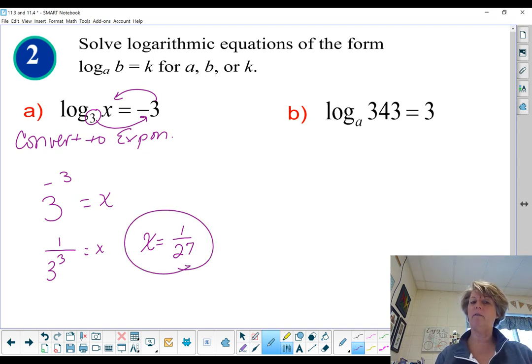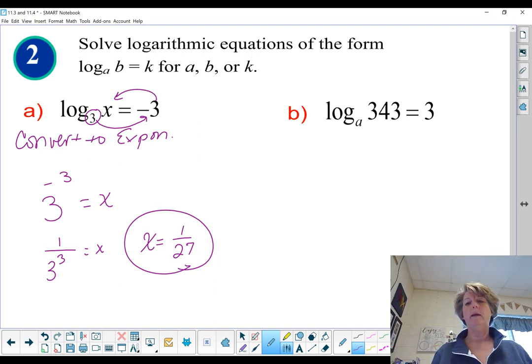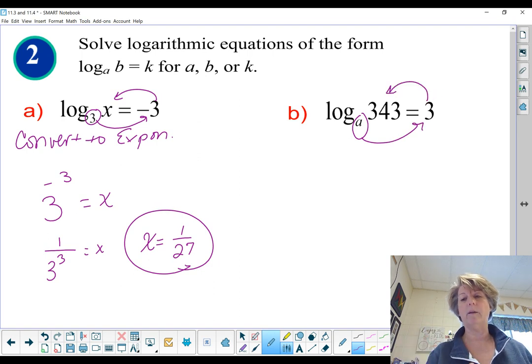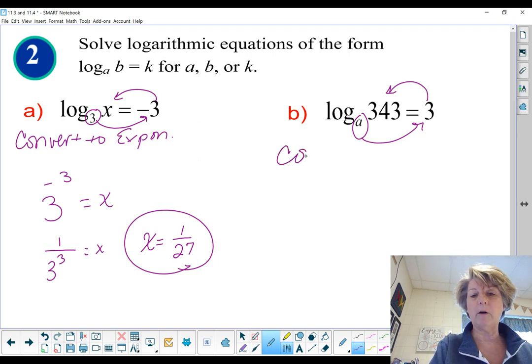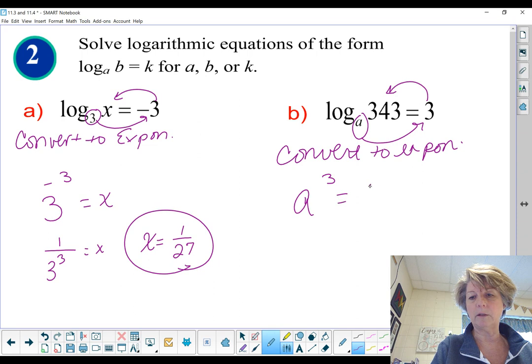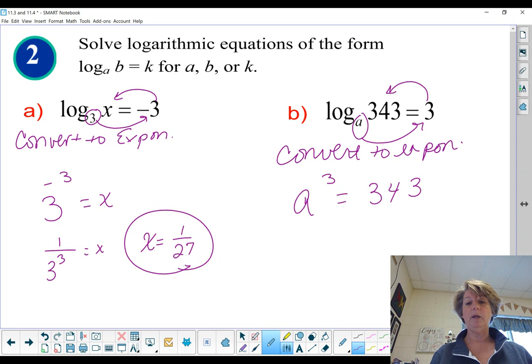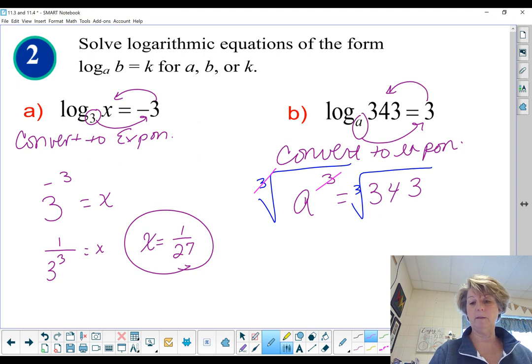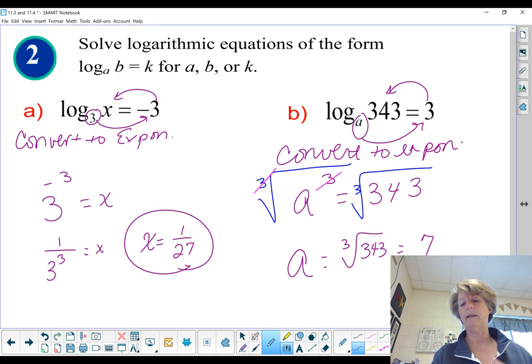3 to the negative 3 equals x. Oh, well, now this is really simple. The negative exponent means 1 over 3 to the 3rd is our x value. And then let's just kind of make that look pretty. So it looks like x equals 1 over 27. There's our answer. Much easier to solve in an exponential form than in the logarithmic form, I believe. All right. This one, a to some power equals, oh, we know the power. A to the 3rd equals 343. Write it. Convert it. Convert to exponential. Your brain will have an easier time. All right. A to the 3rd equals 343. Now, if you looked up on your power table, you could probably figure this out. And I do believe that it's 7. A is 7.